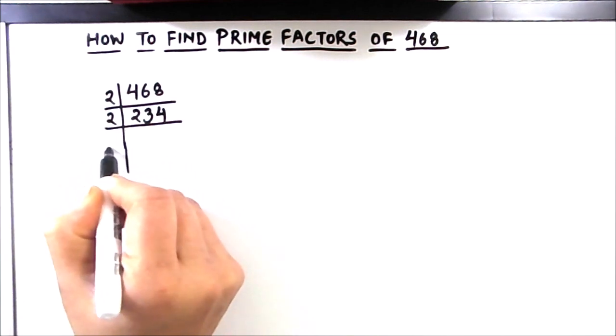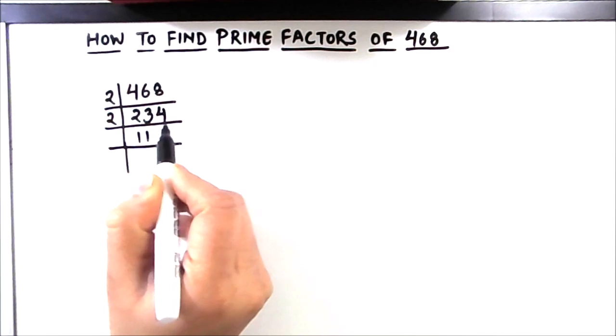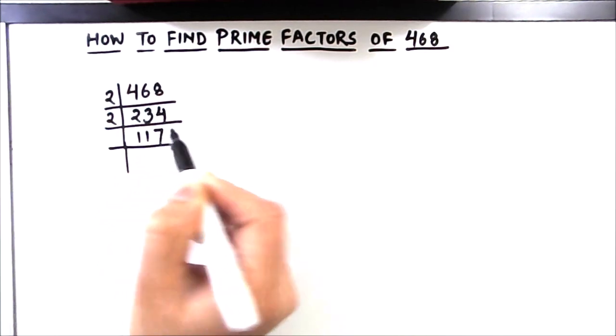Again it can easily be divisible by 2. 2 times 1 is 2, 2 times 1 is 2, 1 is carried over. This becomes 14, 2 times 7 is 14.